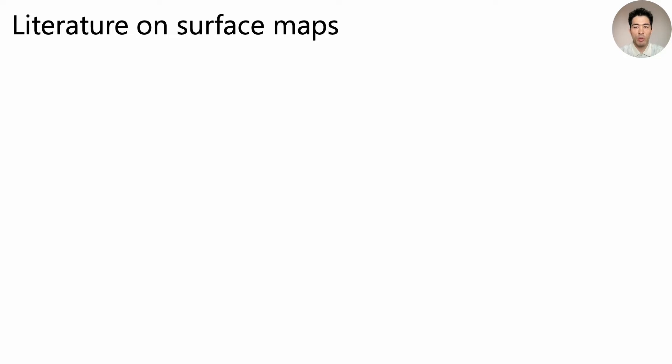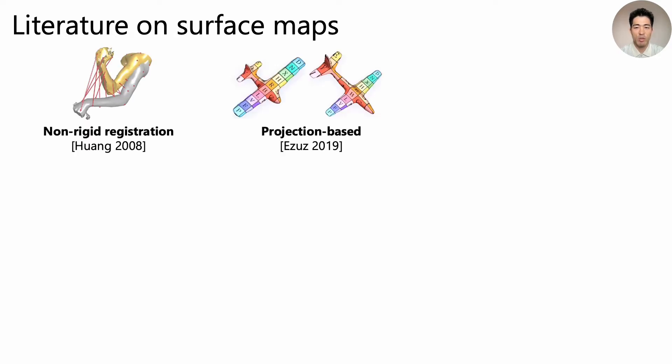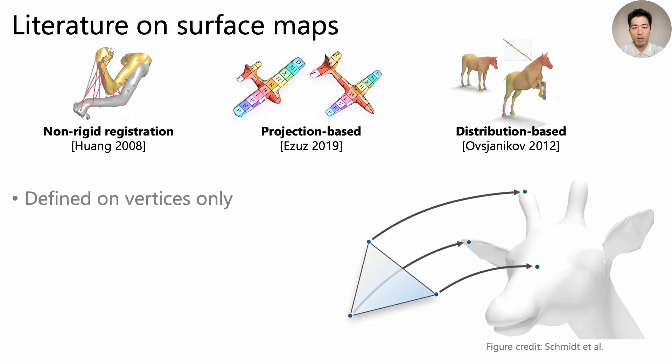There is a vast literature on computing maps between surfaces, and many methods have been proposed, including non-rigid registration methods, projection-based methods, and distribution-based methods such as functional maps. All these have their own merits and applications, but ultimately, these maps are defined on vertices only, and it's not clear at all how to map points on edges or points inside faces to the other surface. So it's hard to get homeomorphisms using these methods.